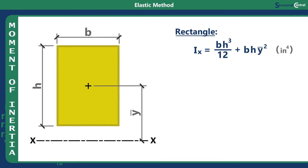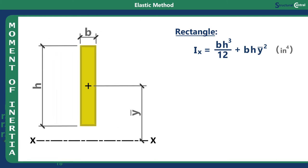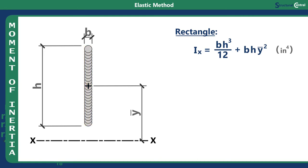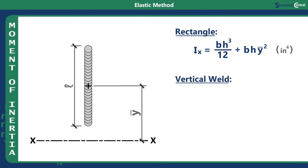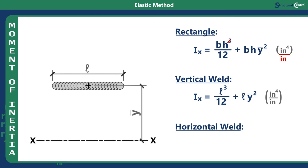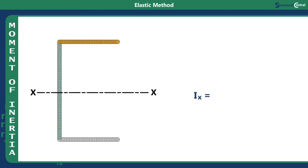For welds, the moment of inertia is determined the same way, except that the aspect ratio is so extreme that the calculation can be done as thickness independent, which means the welds get treated as lines instead of areas. For a vertical weld, this is done by removing B from each term, which changes the result to be in inches to the fourth per inch. For a horizontal weld, you remove H from each term. Since the first term includes a very small variable squared, it can be considered negligible and be removed from the equation. To get the moment of inertia for a more complicated shape, you can break the shape up into pieces, determine the moment of inertia for each piece, then add them all together.